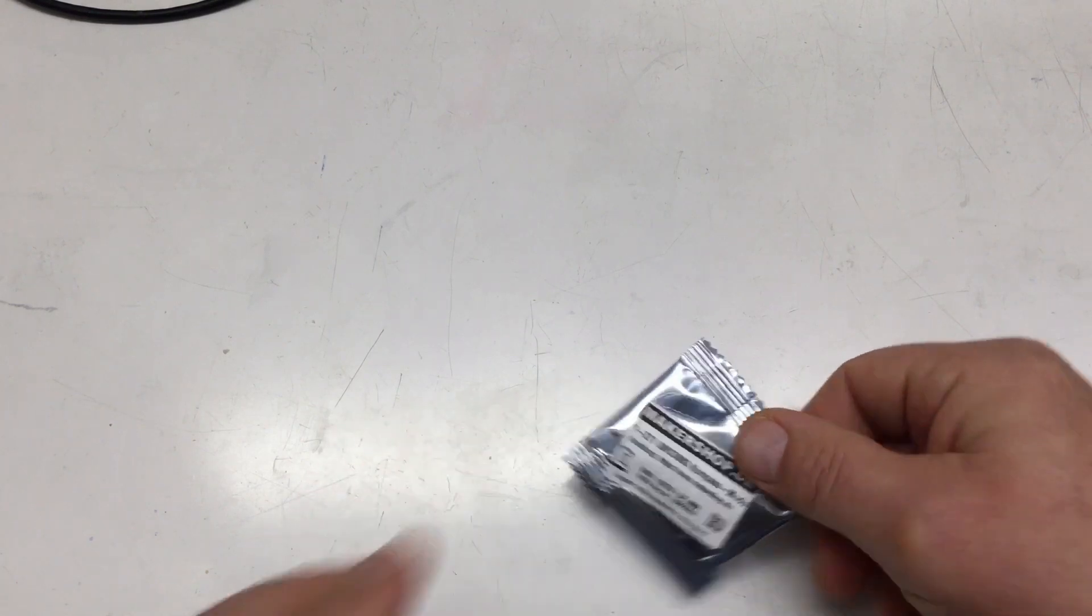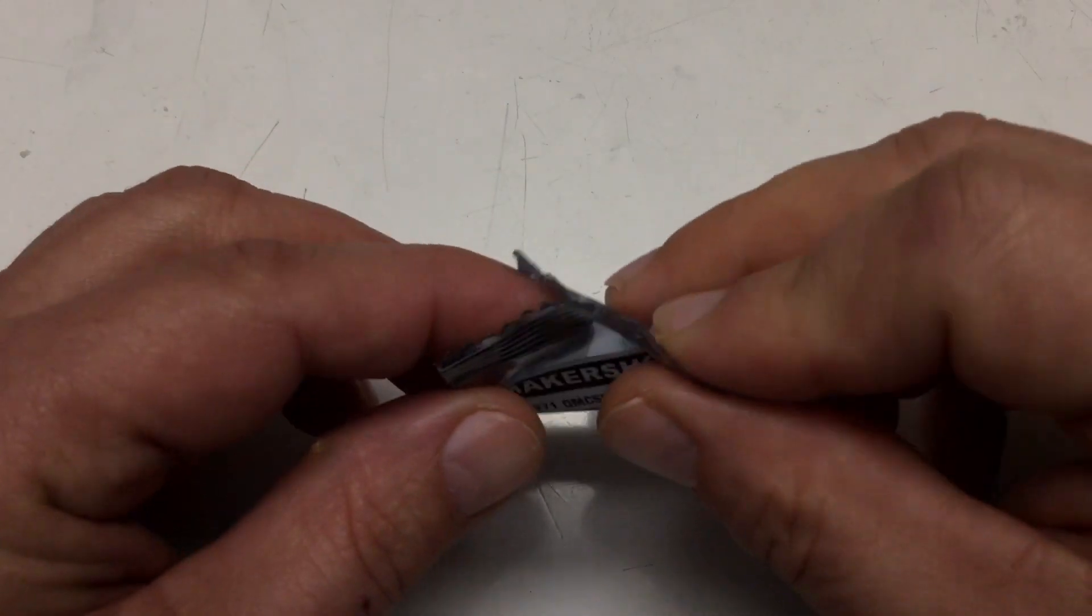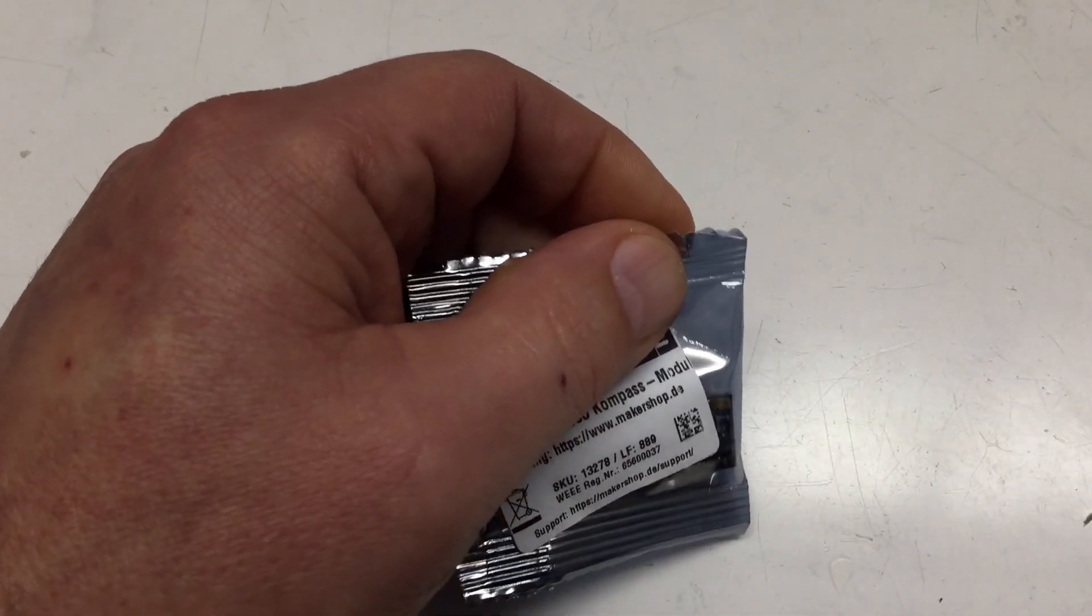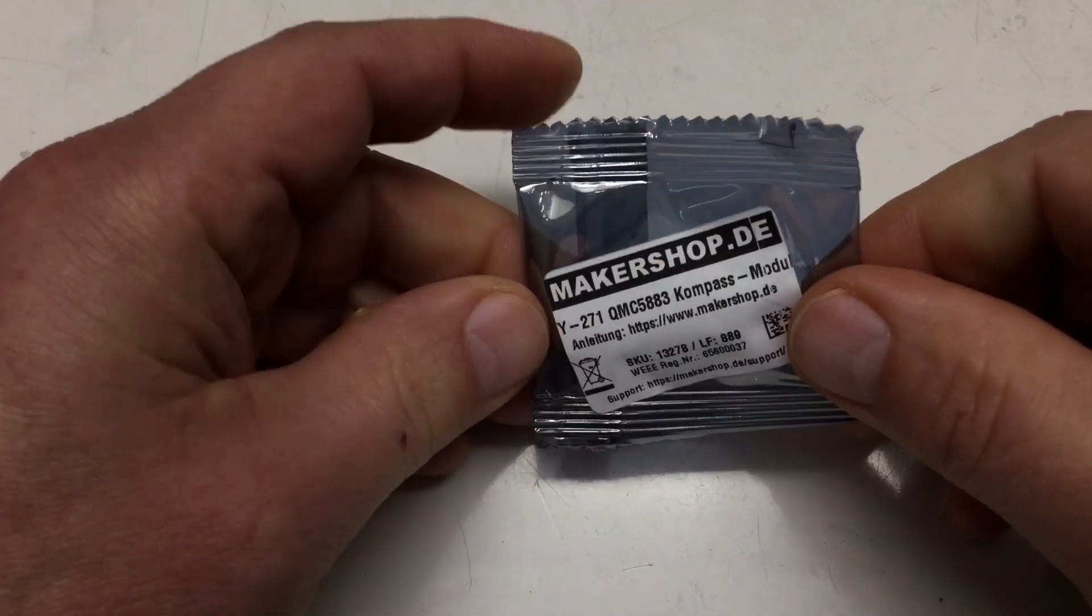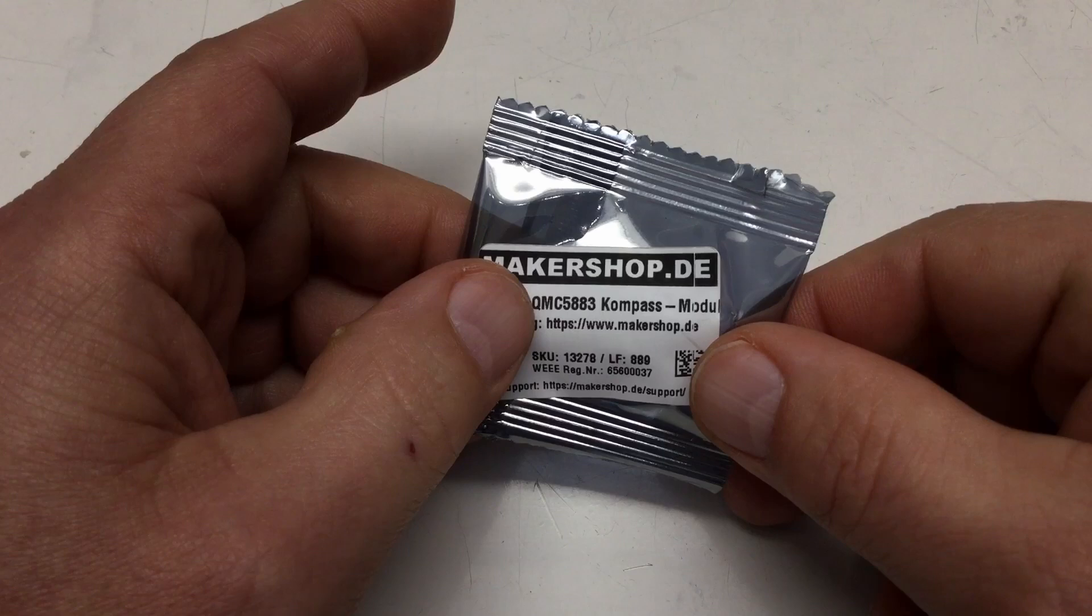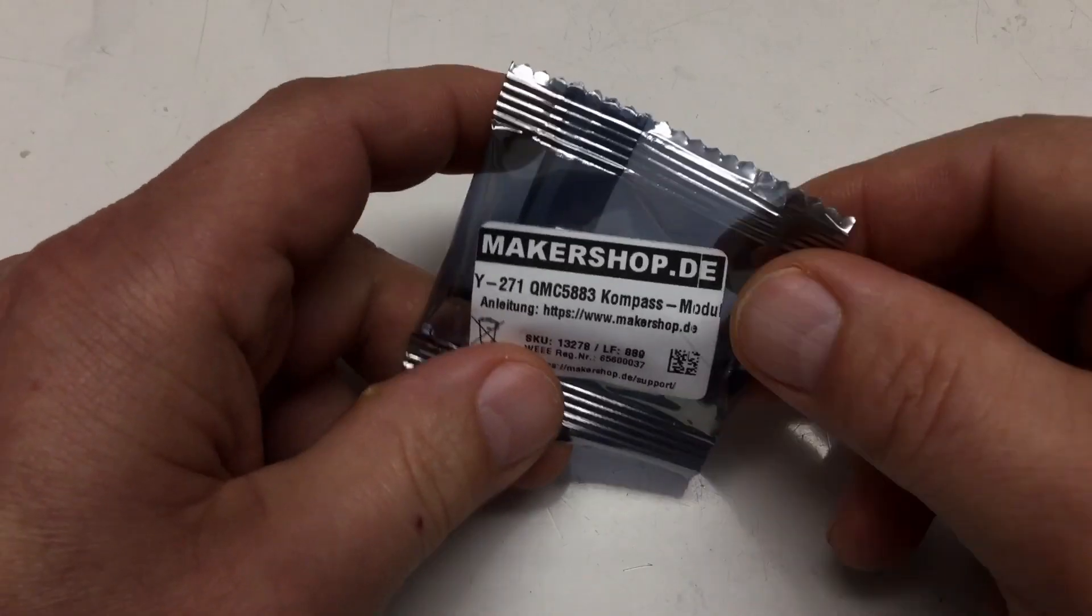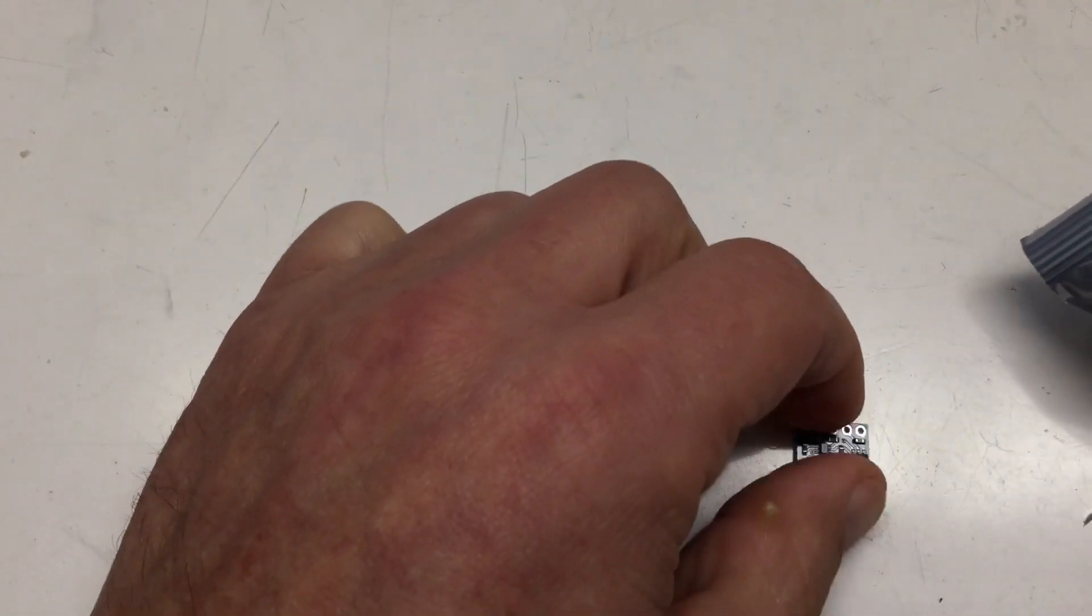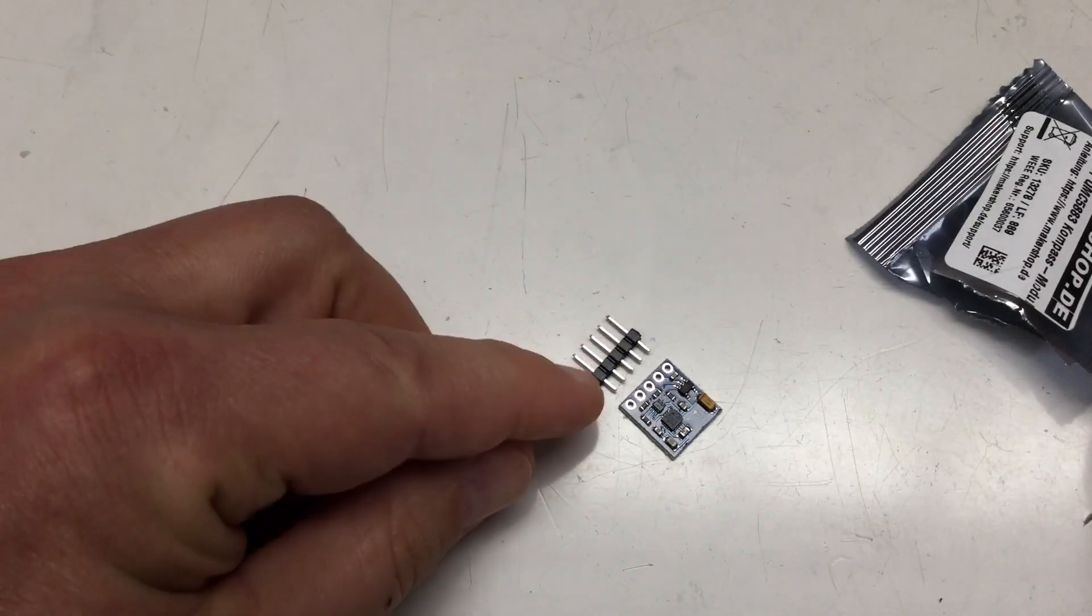This is a really small bag. The bag within the bag is really small. It's a GY-271 with a QMC 5883 compass module. Basically, it's a three-axis magnetometer on a breakout board with quite a lot of components and the pin header for you to solder in.